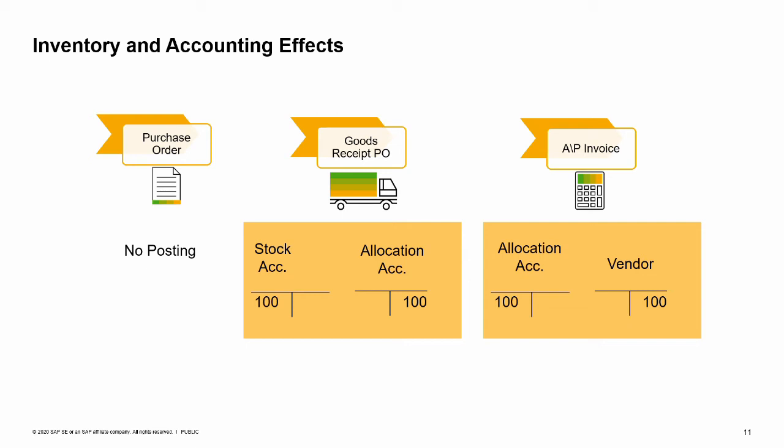The Goods Receipt PO creates a journal entry that posts the value of the received goods to the debit side of the stock account and to the credit side of an allocation cost account. The stock account and the allocation cost account are retrieved from the inventory account field and the allocation account field on the inventory data tab of the item master record.